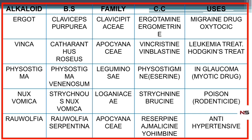The next one is nux vomica. Nux vomica's biological source is Strychnos nux-vomica, family Loganiaceae. The main constituents are strychnine and brucine. Strychnine is a rodenticide used to kill rats; it's also used as a pesticide. Strychnine is a very poisonous substance.